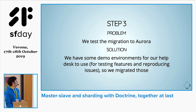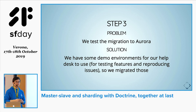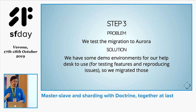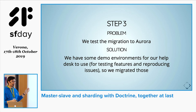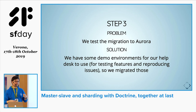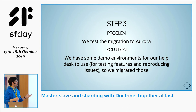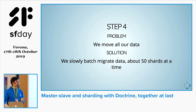Step three was to test the migration to Aurora. We moved the demo environments — used by our help desk to test new features and reproduce issues — onto the new platform. Same as step one, we asked our help desk people to test them and report anything weird. When that was done, we were confident to move to step four, the final step: move everything else.